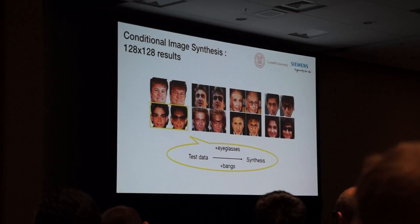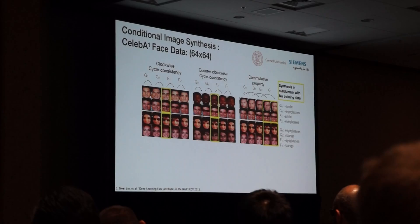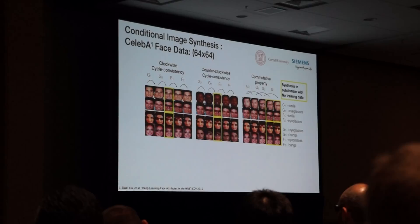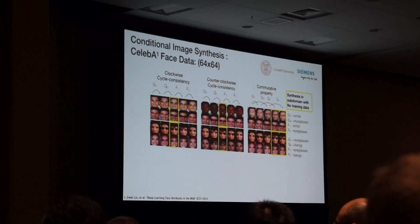In particular, images synthesized along the path demonstrating clockwise cycle consistency, counterclockwise cycle consistency, and the commutative property are presented, and the performance in the target subdomain with no training data available is highlighted.